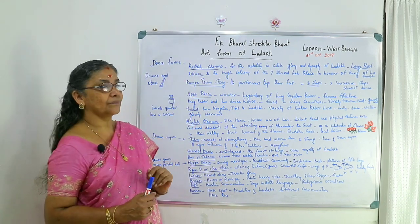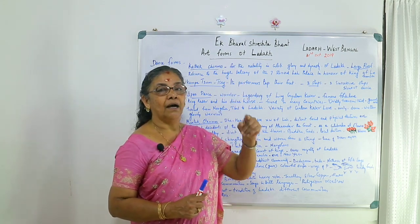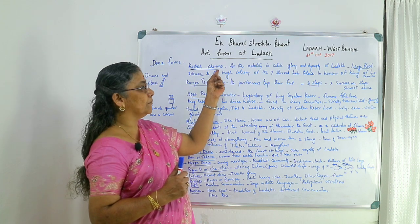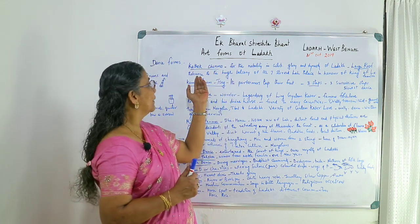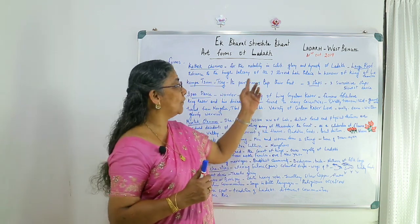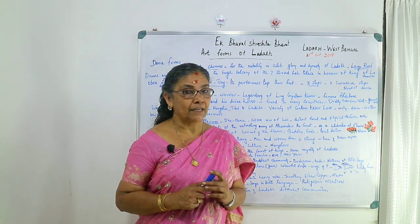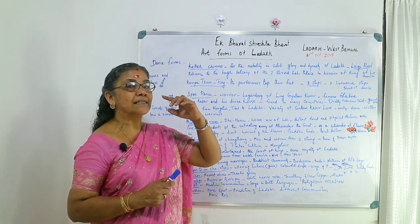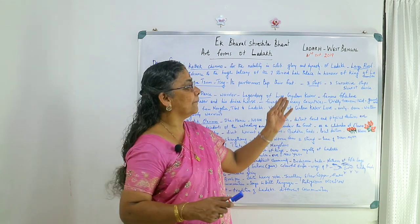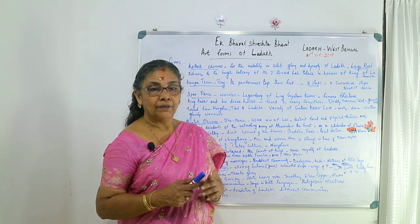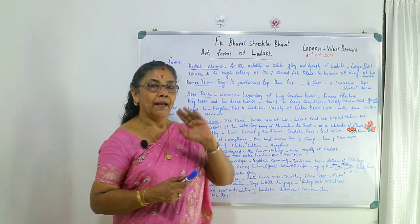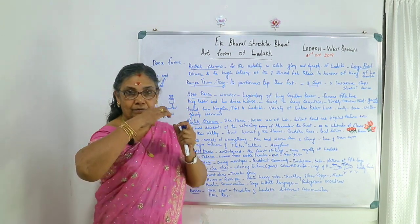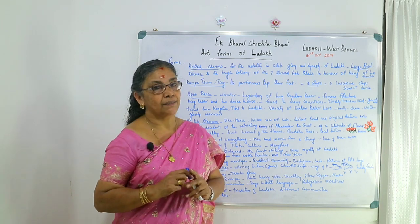The first dance form is Kathok Chenmo. It is a dance form which is for the nobility and celebration of the glory and dynasty of Ladakh. The meaning of Kathok Chenmo is 'the large roof,' and it is a reference to the huge balcony of the seven-storied Leh Palace. Leh is the capital of Ladakh. In honor of the king of Ladakh and his family, this dance is performed. Generally in the dance forms you can see drums and oboe — a tube-shaped musical instrument — used most often.